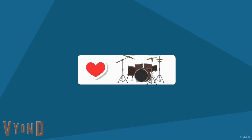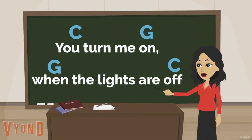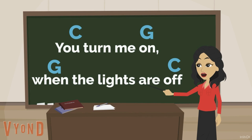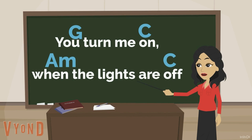Again, it has a rhythm to it which music loves. So I'm going to use the chord of C and the key of C and the chords within the key of C. So here we go: 'You turn me on when the lights are off.'